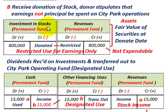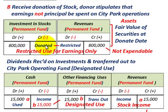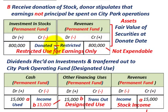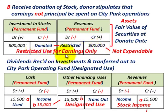Remember, this investment in stock of $800,000 is non-expendable in the permanent fund — that amount has to stay intact. Its value can go up or down, and we would record changes in fair value in our investment in stock account. Any increases in that principal amount could potentially be spent, but we must keep the principal amount intact as it has a restricted use.